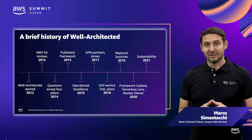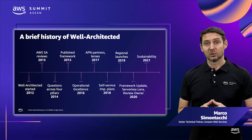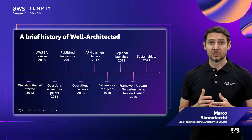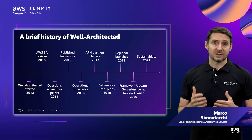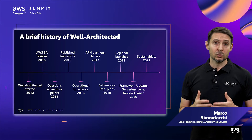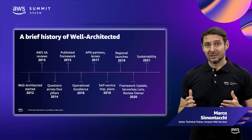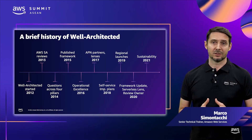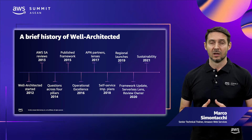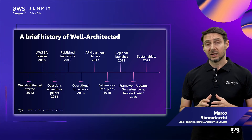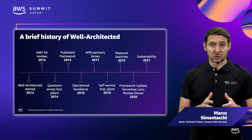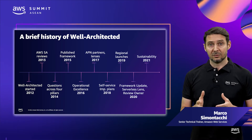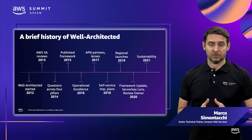In 2018, AWS launched the AWS Well-Architected tool, a self-service tool designed to help you review AWS workloads at any time without the need for an AWS Solutions Architect. We also added improvement plans based on the areas of high and medium risk identified by the AWS Well-Architected tool.